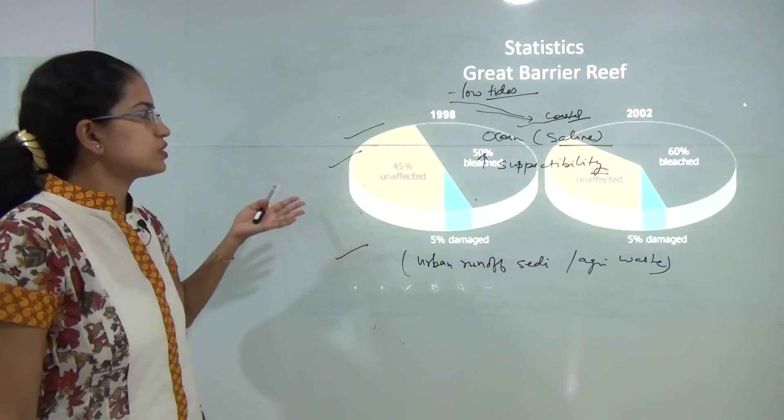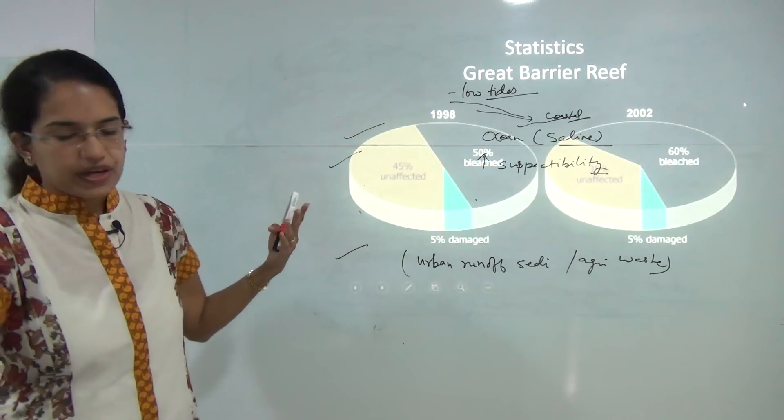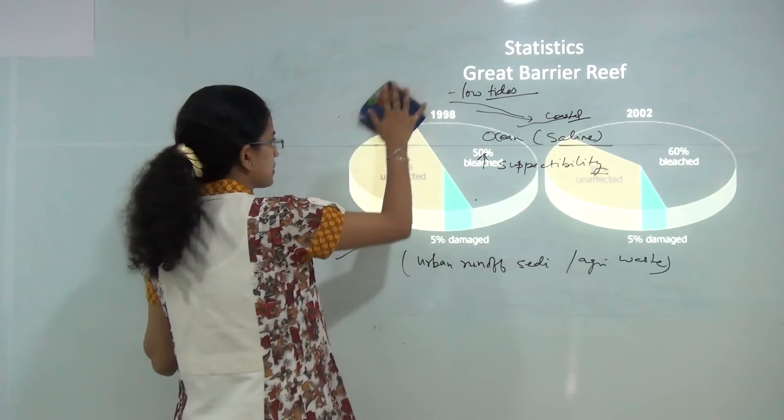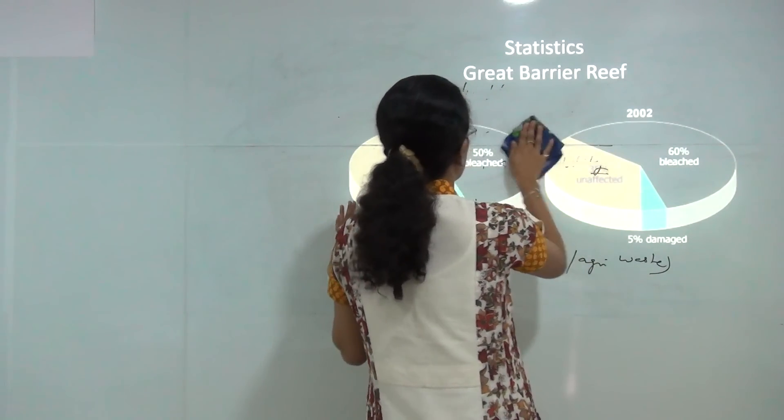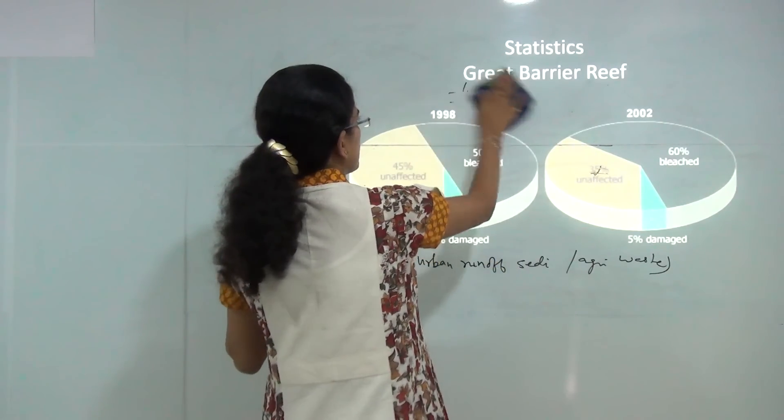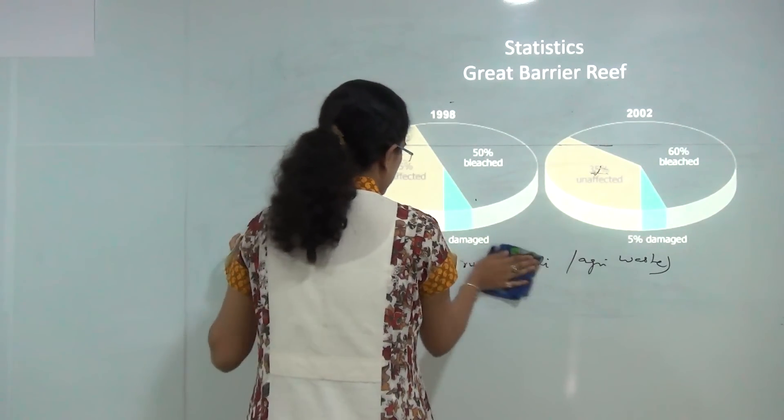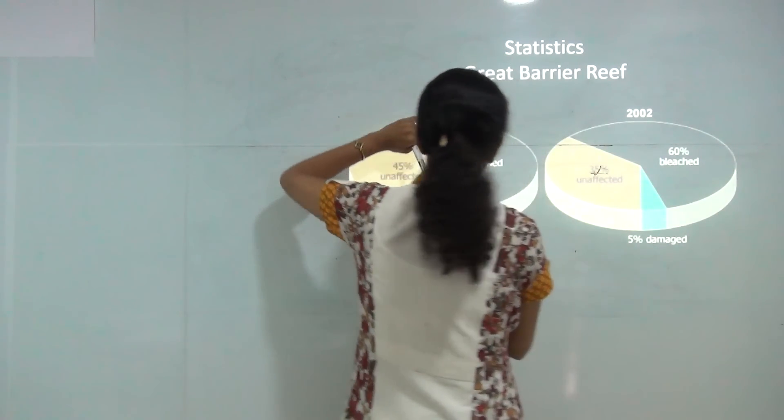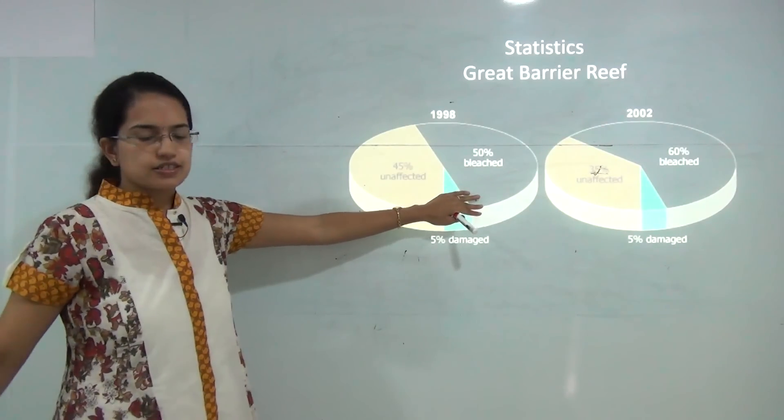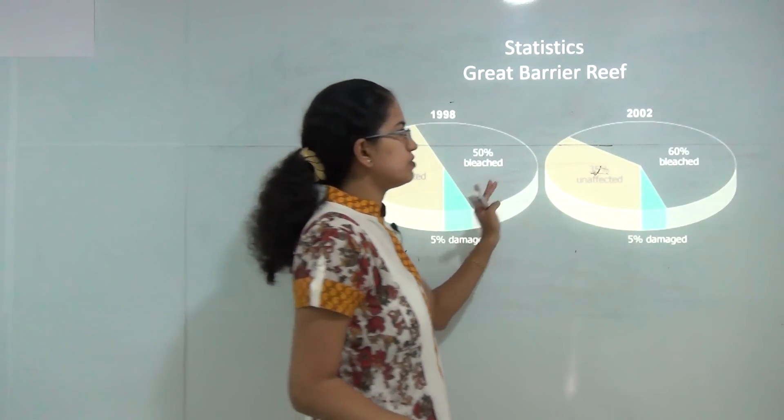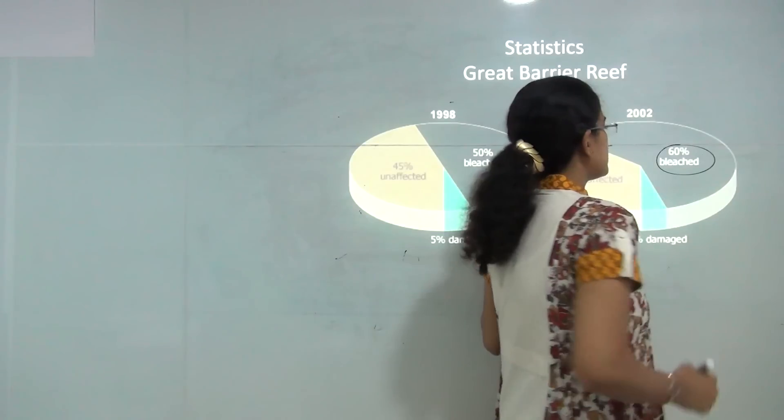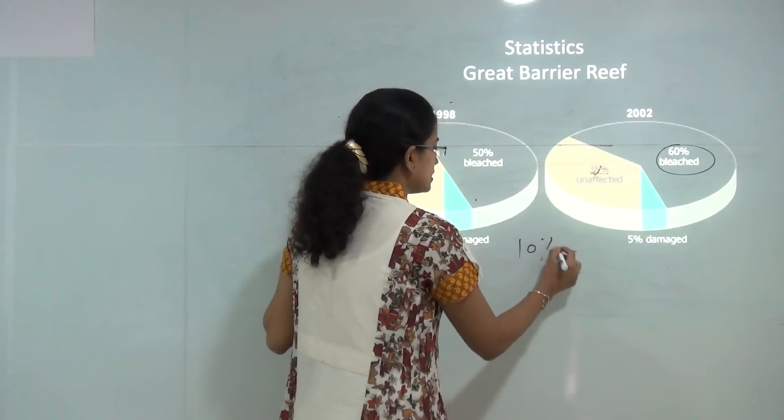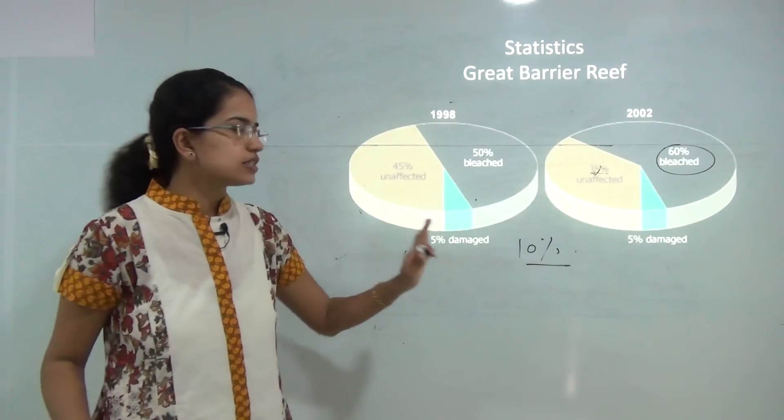There were few major episodes that affected the coral bleaching a lot. This is the comparison for 1998 and 2002 for the Great Barrier Reef. It is believed from Darwin to Broome that in 1998 there was only 50% of the bleaching that occurred. However, in 2002 this bleaching increased drastically to 60%. There was around 10% increase in the amount of corals that were bleached.